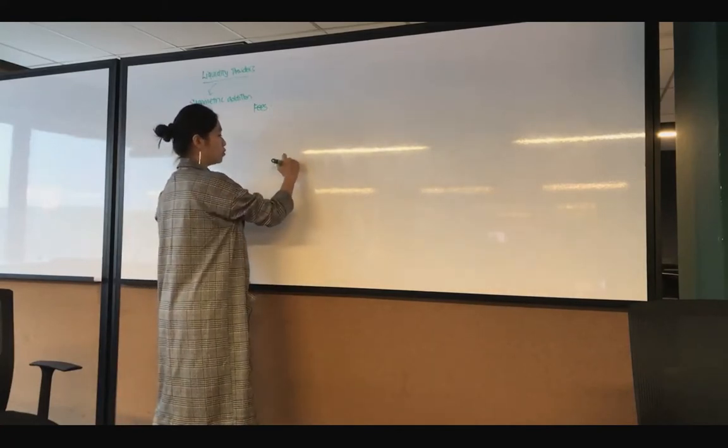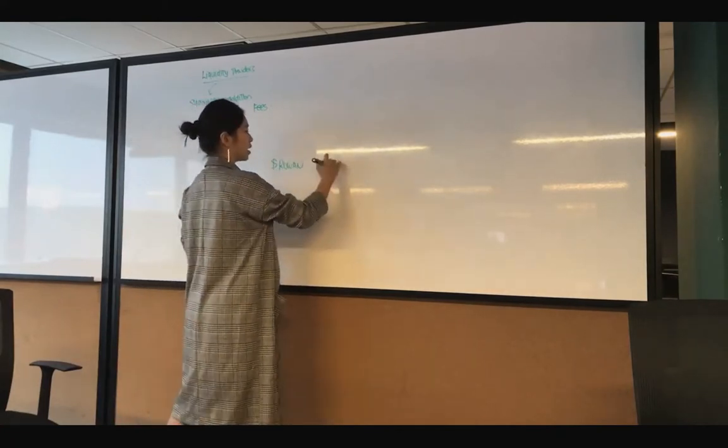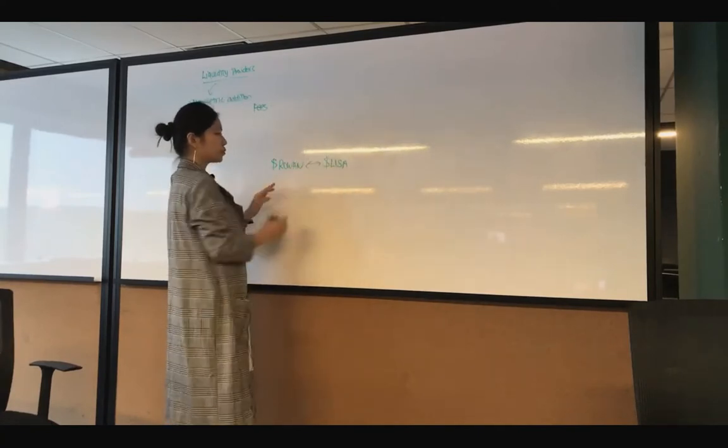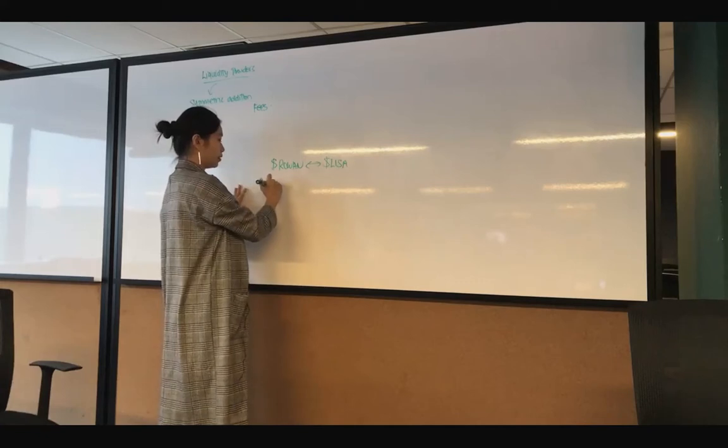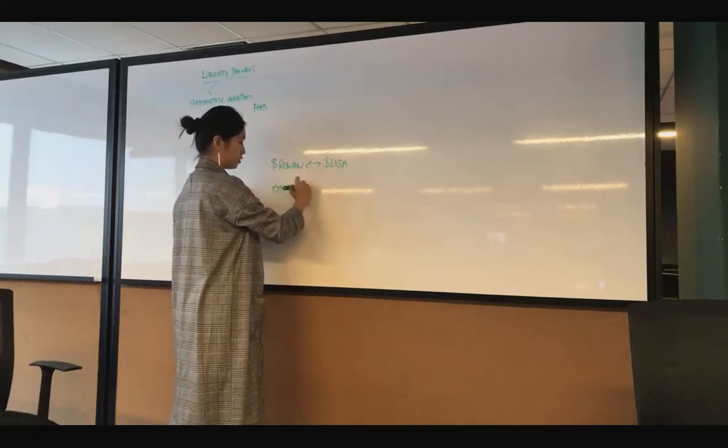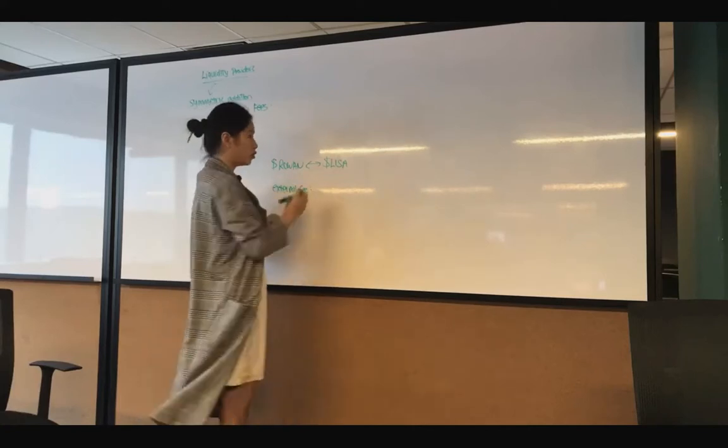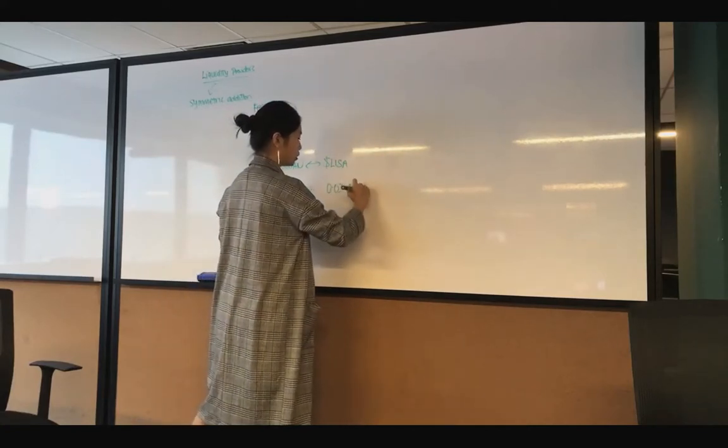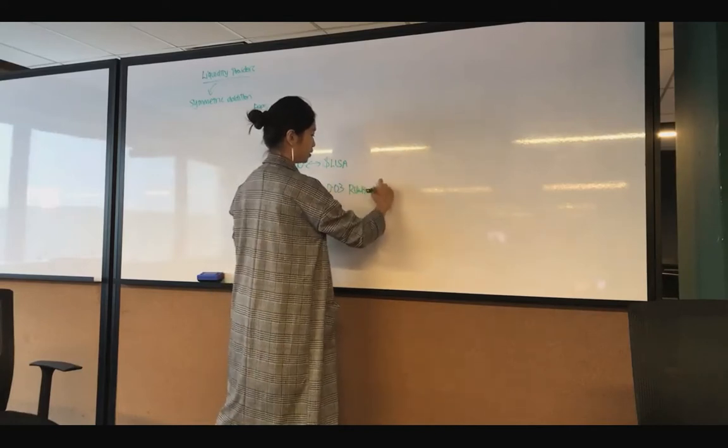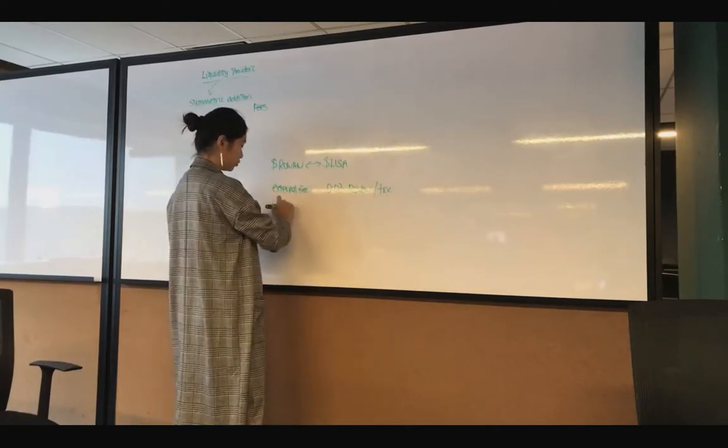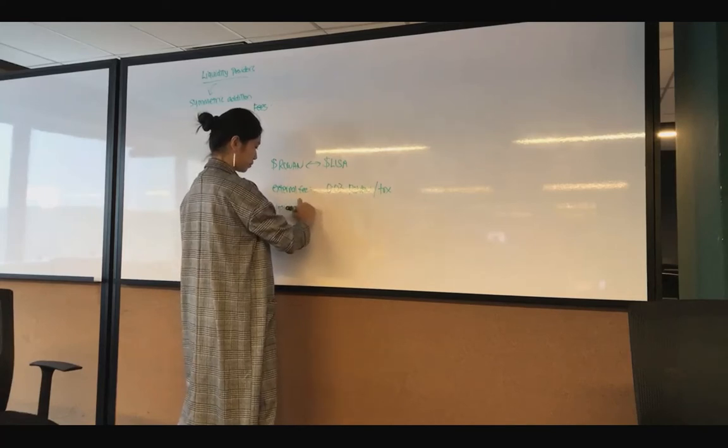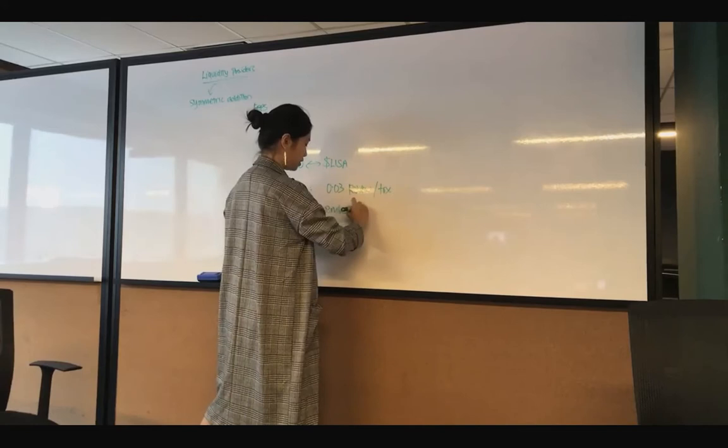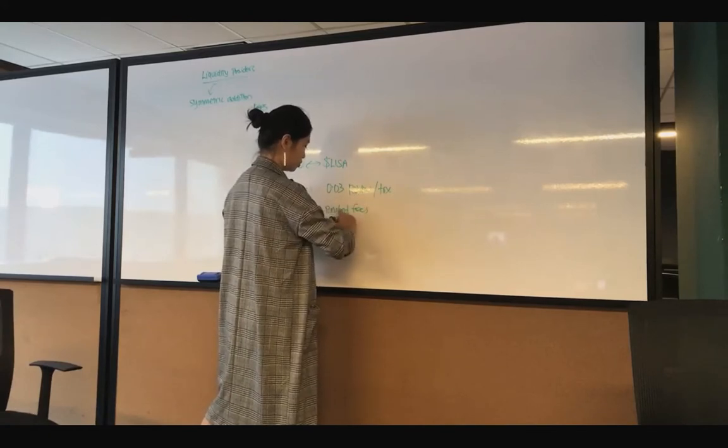What do I mean? I mean if I have Rowan tokens, I have Lisa tokens, I want to trade. If we have an external fee, it could be something like a fixed fee of 0.03 Rowan per transaction. Or we can have an internal fee where we embed the fees into transactions.